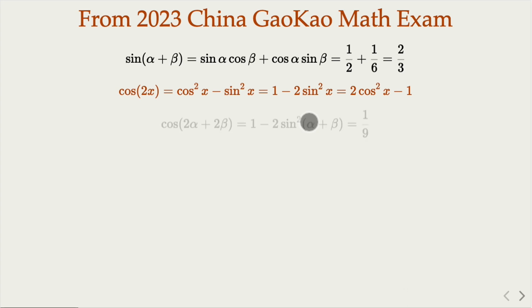So that is the final answer: cos(2α + 2β) is 1/9.